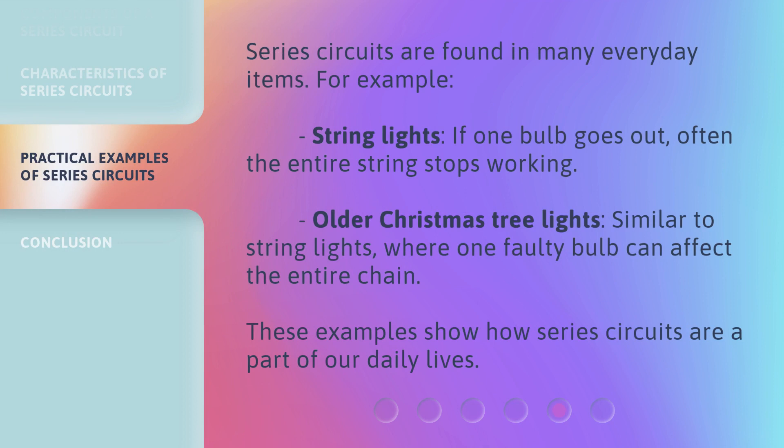Series circuits are found in many everyday items. For example, string lights: if one bulb goes out, often the entire string stops working. Older Christmas tree lights, similar to string lights, where one faulty bulb can affect the entire chain. These examples show how series circuits are a part of our daily lives.